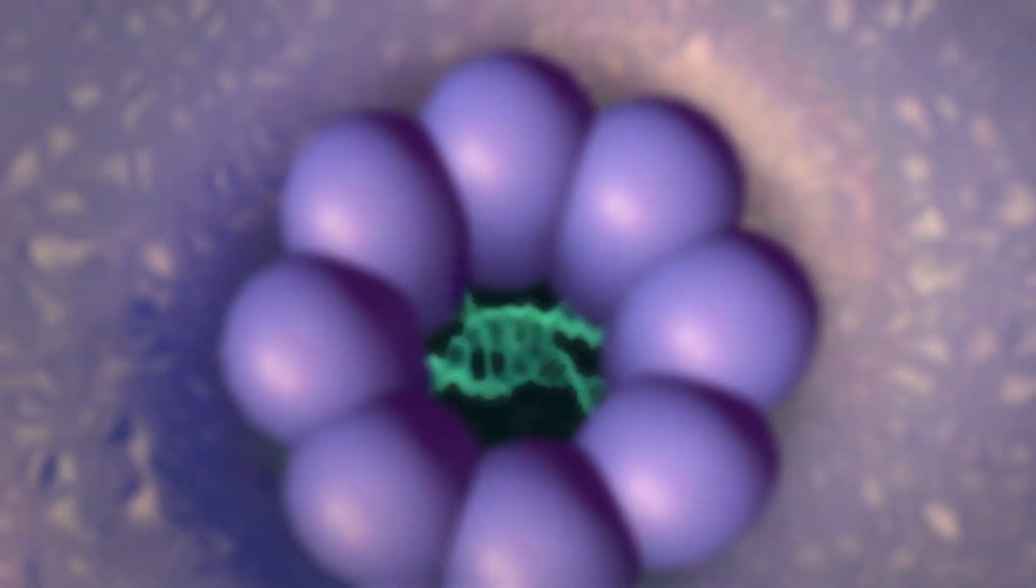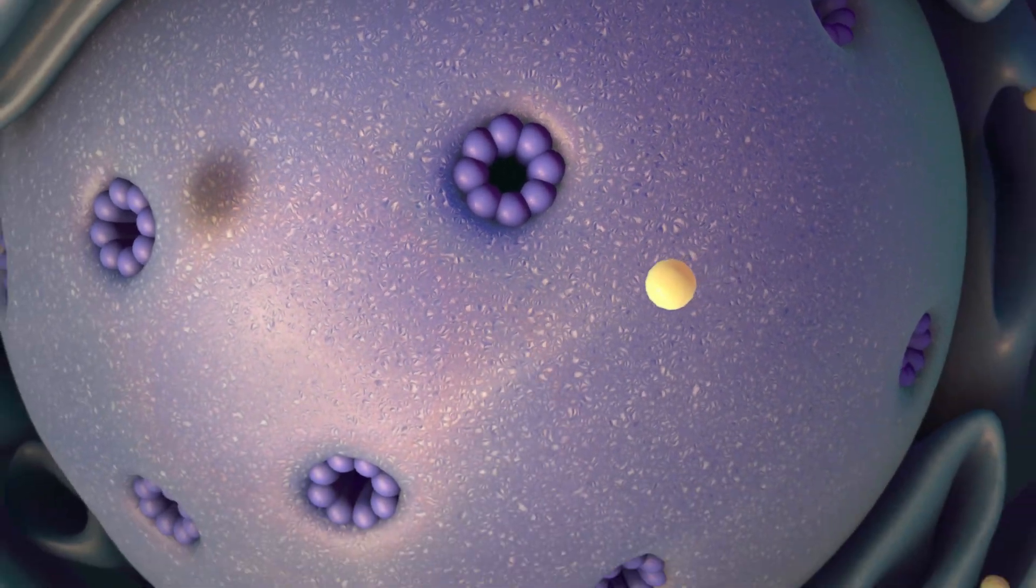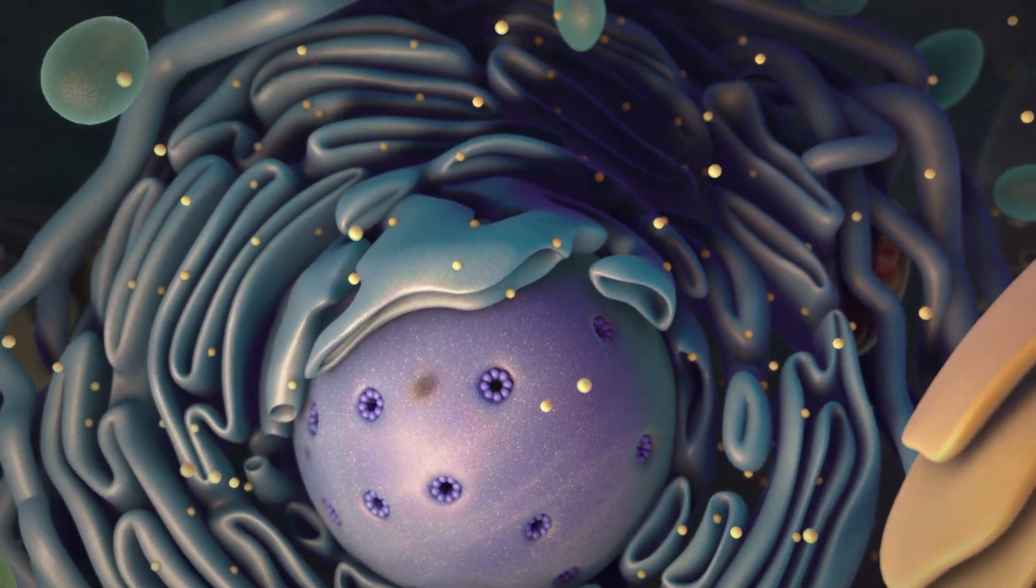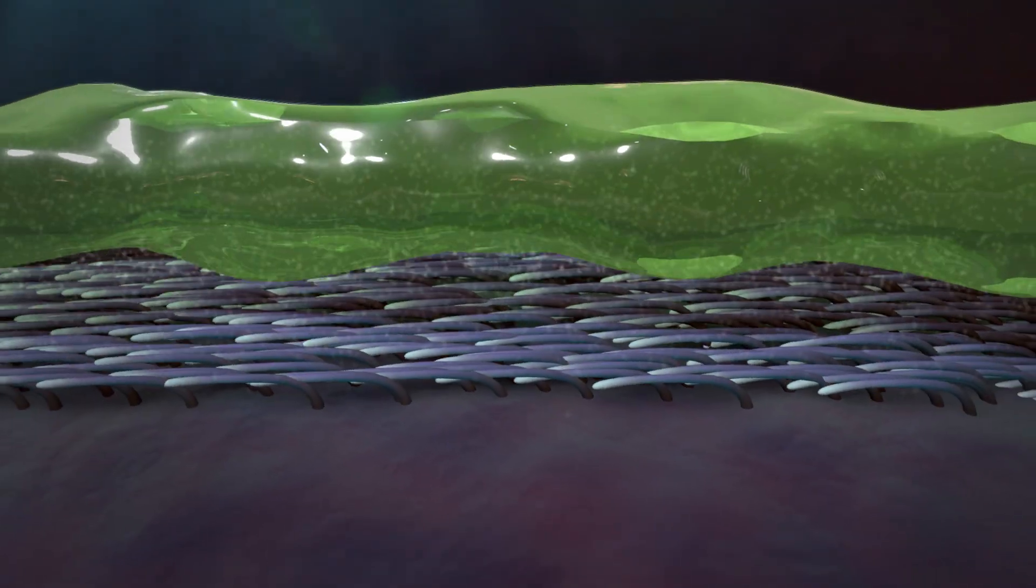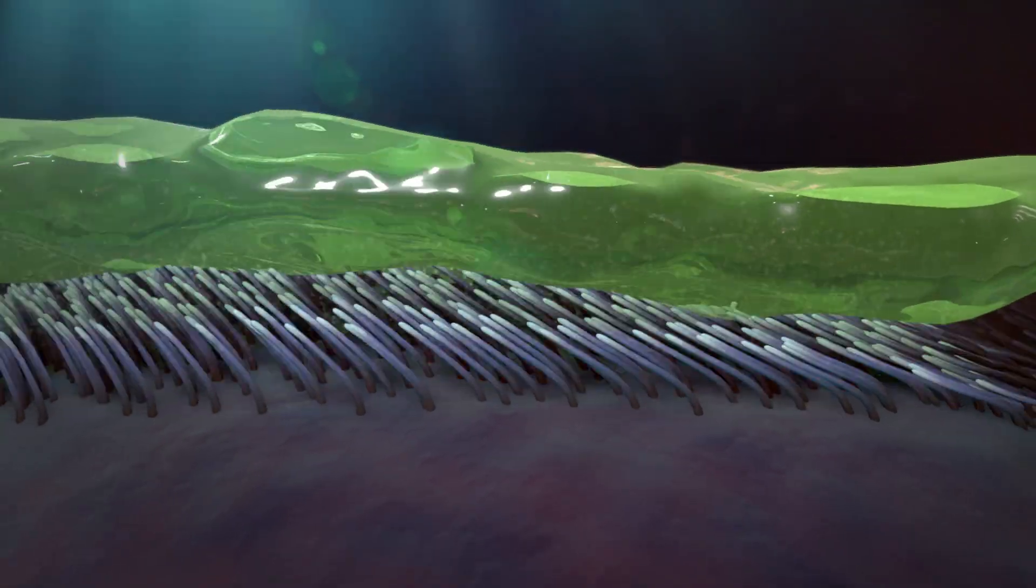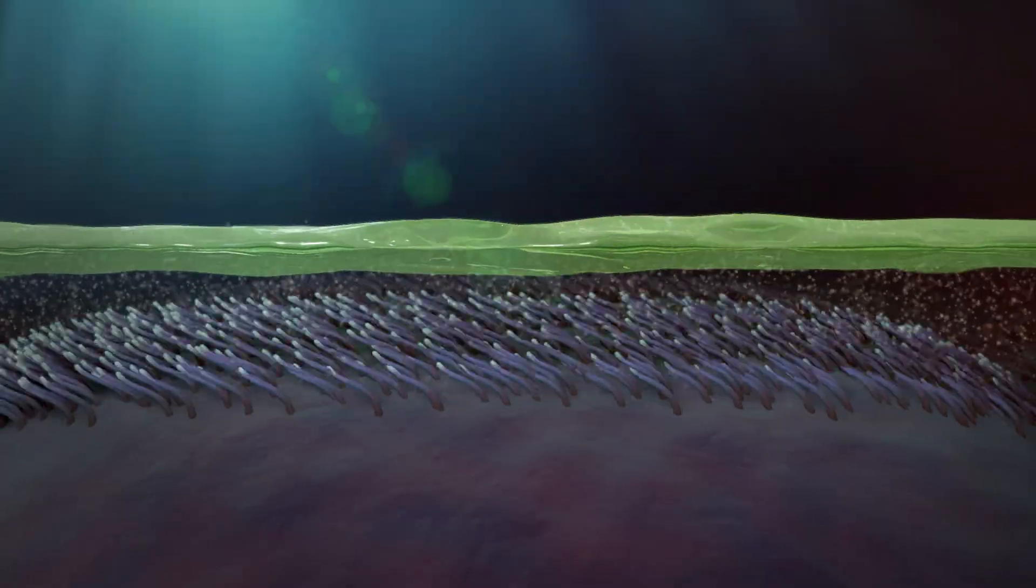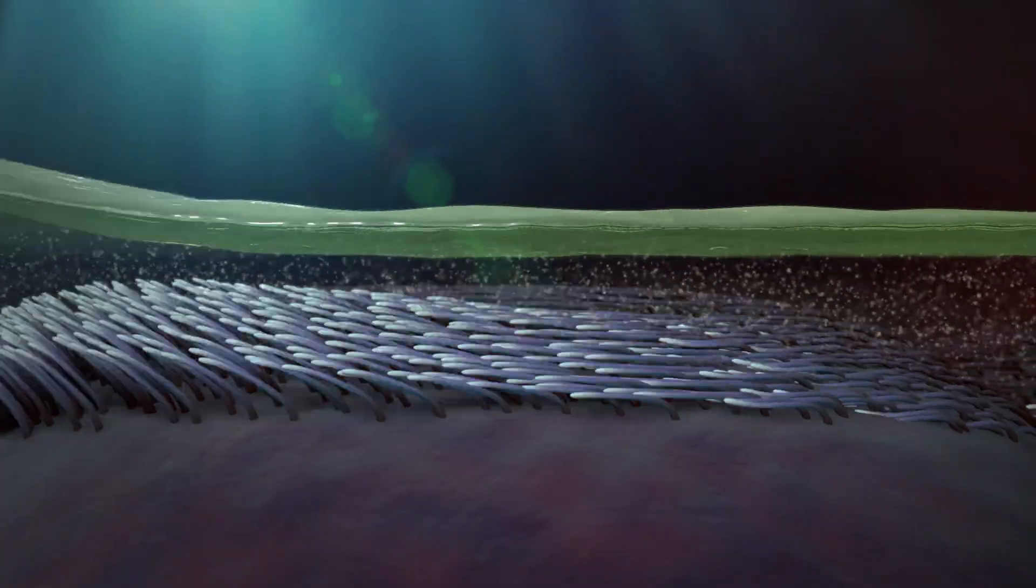The cell then uses the corrected DNA strand to produce a functional CFTR protein that allows the proper flow of salt and fluids through the cell membrane. Mucus returns to normal within the lung, allowing the cilia to beat freely and clear the lungs of germs and irritants.